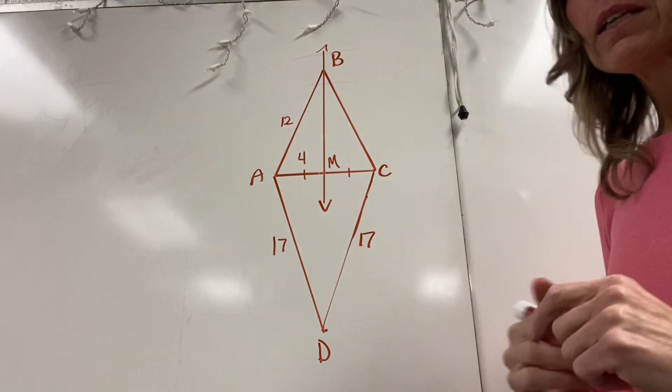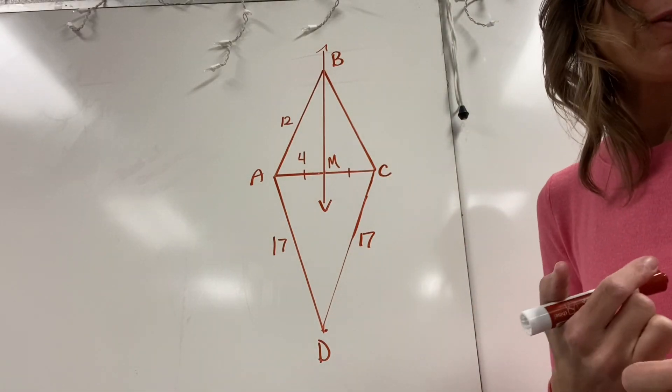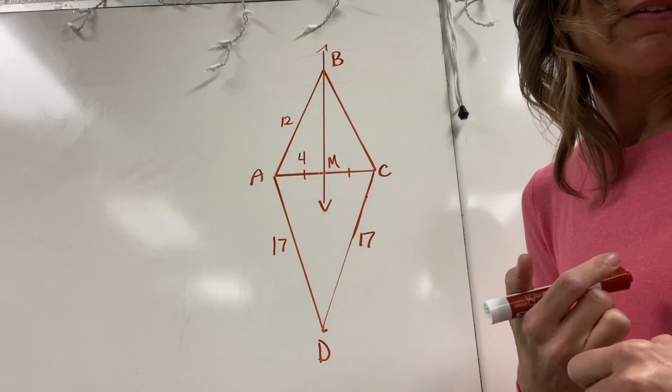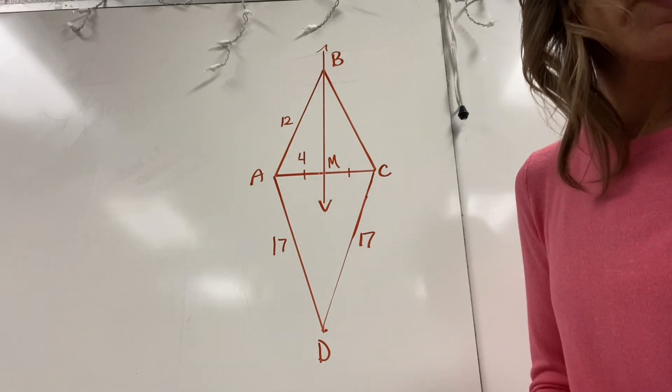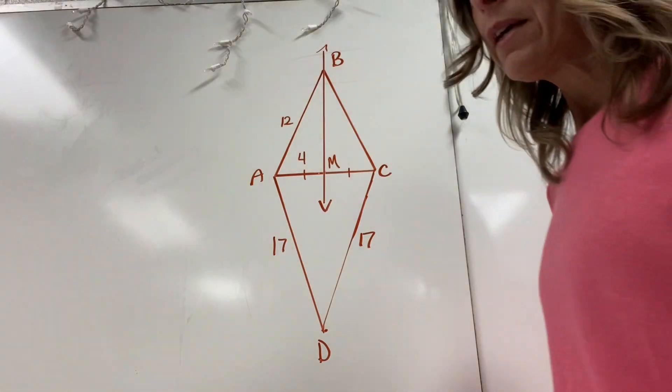This video is going to explain numbers one through three on your review sheet. In numbers one through three, number one in particular — let's start with that one.